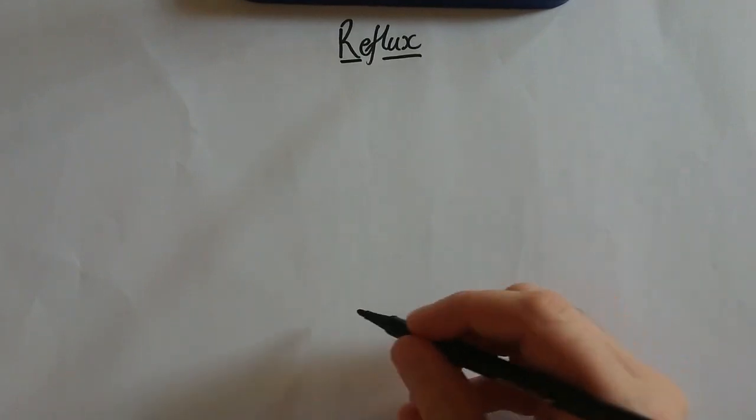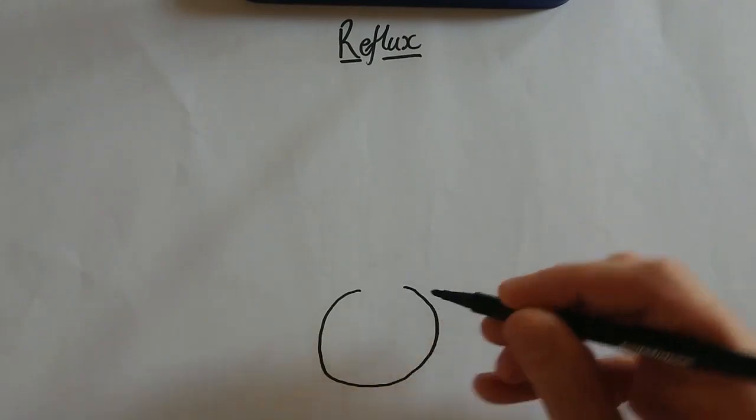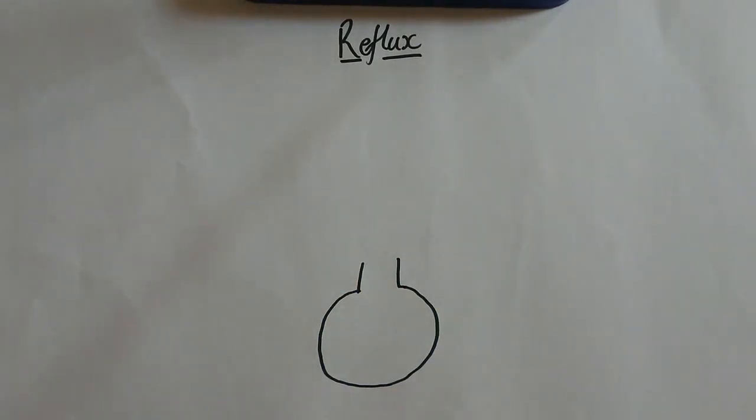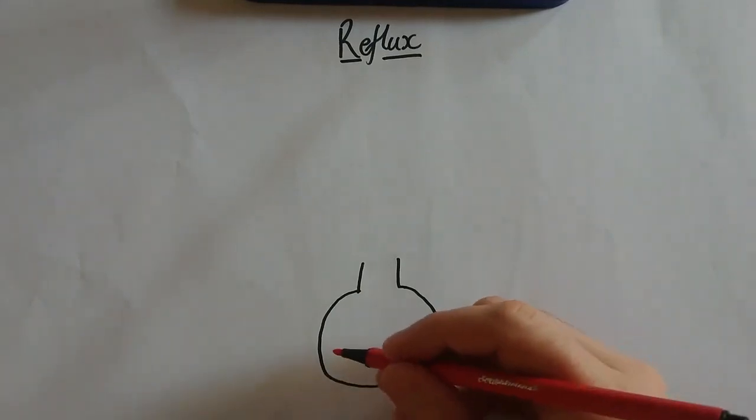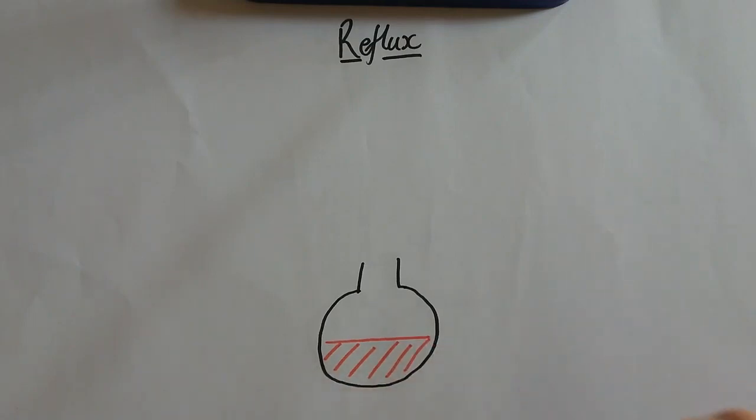So we're going to start off in exactly the same way as we did before. We're going to start off with our round-bottom flask. And in that, we're going to put our mixture of our primary alcohol, although it doesn't actually have to be a primary alcohol.